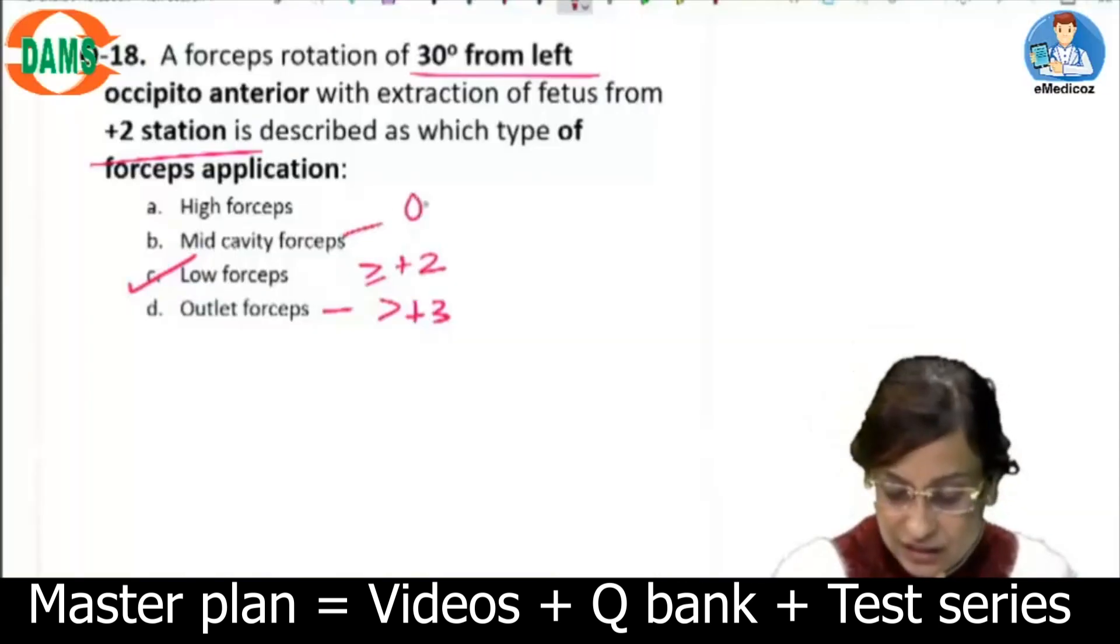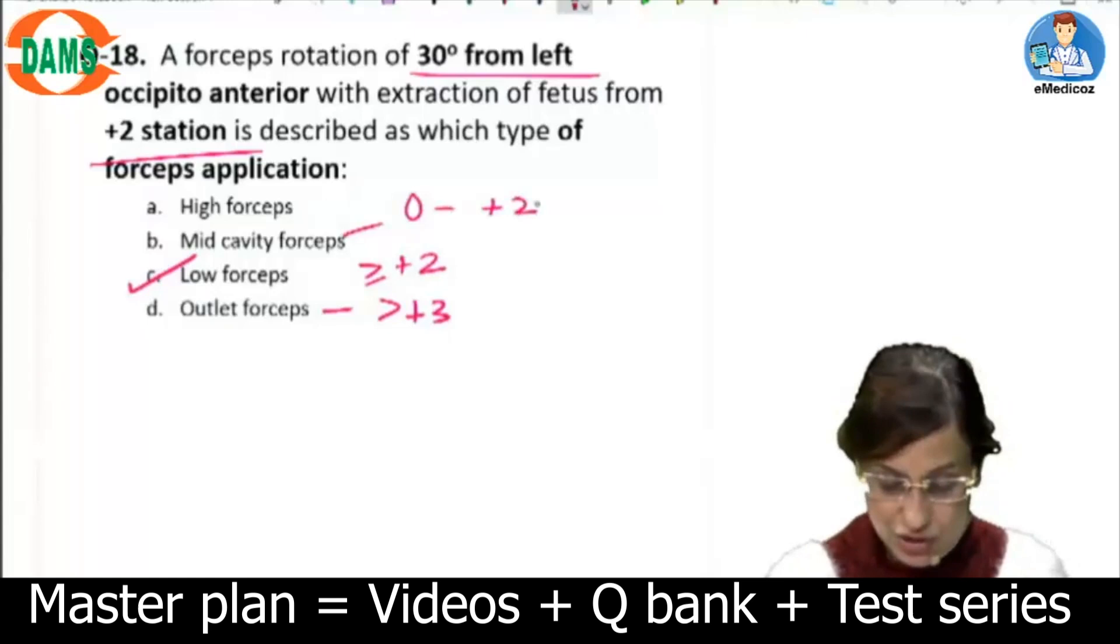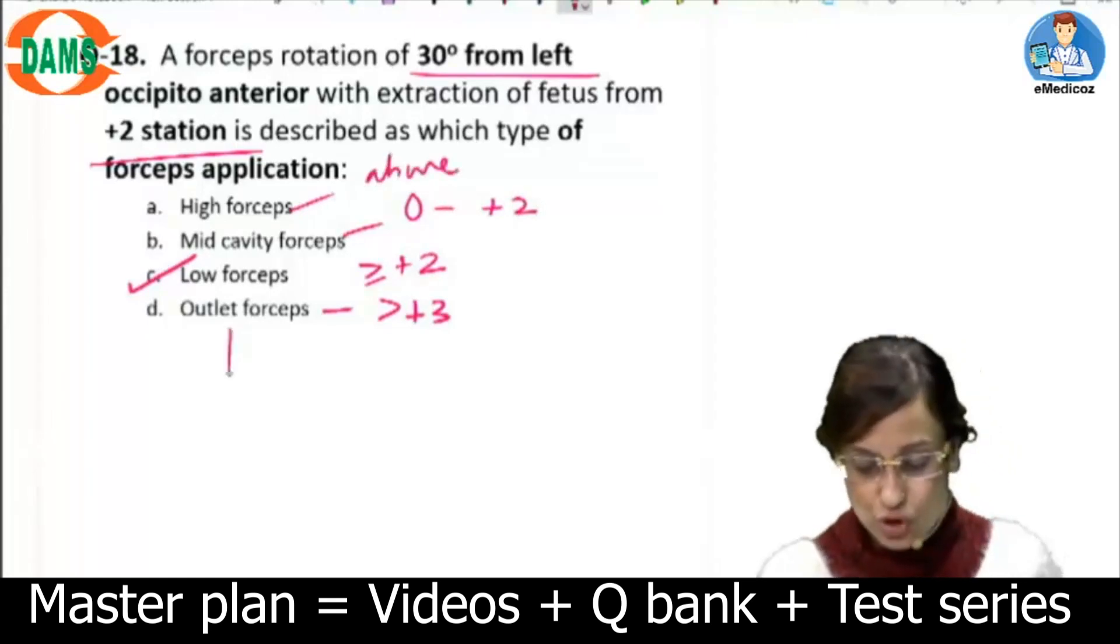Mid cavity is when it is between zero and plus two, and high is above zero. Most commonly we use outlet forceps, but we can also use low forceps.